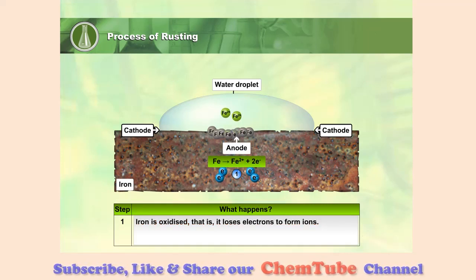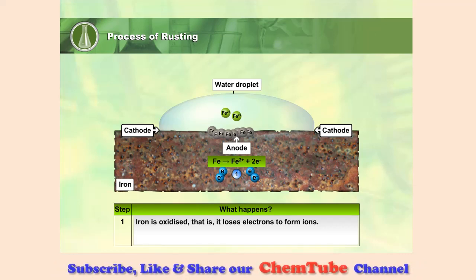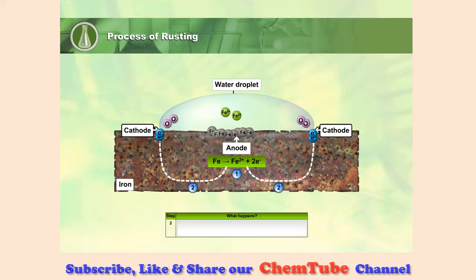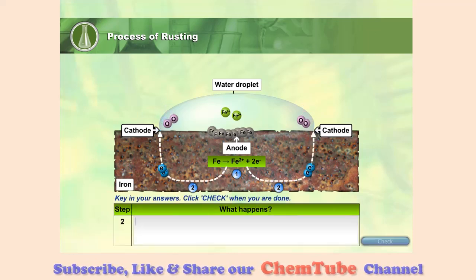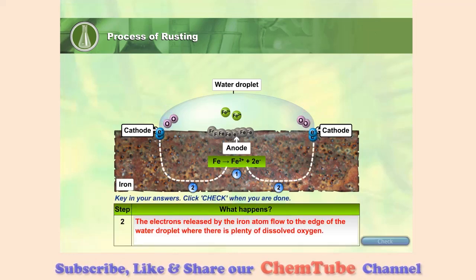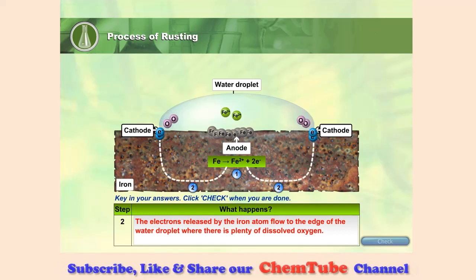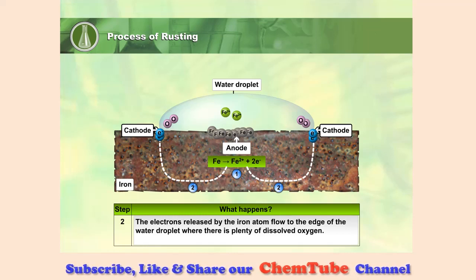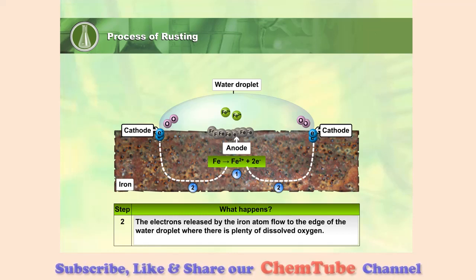Iron is oxidised — that is, it loses electrons to form ions. The electrons released by the iron atom flow to the edge of the water droplet where there is plenty of dissolved oxygen.